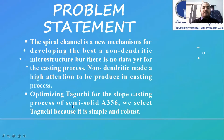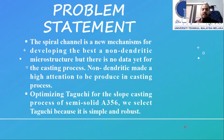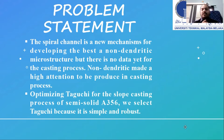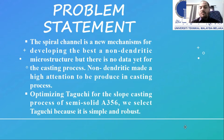Moving to the problem statement. The spiral channel is a new mechanism for developing the best non-dendritic microstructure, but there is no data yet for the casting process. Non-dendritic microstructure has attracted high attention to be produced in the casting process. The second problem is optimizing the Taguchi method with the spiral channel casting of the semi-solid aluminum A356.